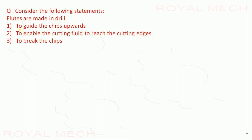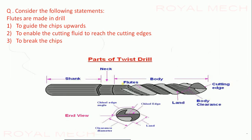Consider the following statements about flutes in a drill: flutes are made to guide chips upward, to enable cutting fluid to reach the cutting edges, and to break the chips. As we can see, flutes guide chips upward and enable cutting fluid to reach cutting edges. The option about breaking chips is wrong — there is no such application. Therefore, options 1 and 2 are correct.